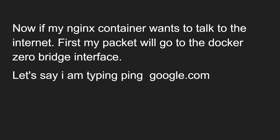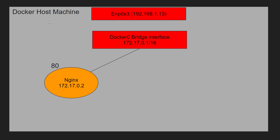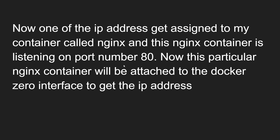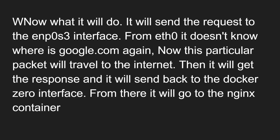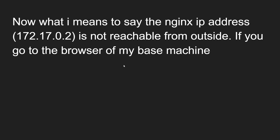If my nginx container wants to talk to the internet — for example, running `ping google.com` inside the container — the packet first goes to the docker0 bridge interface. The docker0 interface checks: where is google.com? It's not local, so it forwards the request to enp0s3. From enp0s3 it travels to the internet. The response comes back through enp0s3, then through docker0, and back to the nginx container. So outbound communication works fine.